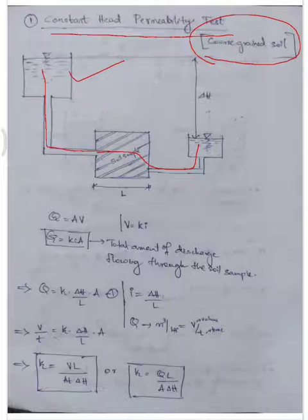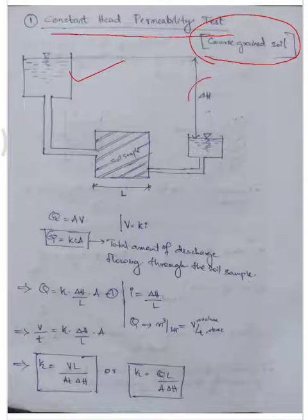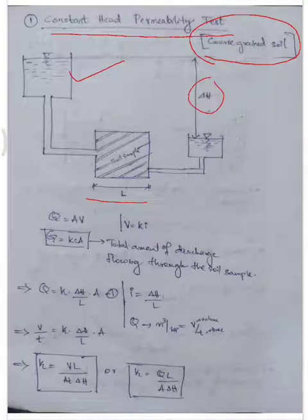Now let's go to the equation. The discharge Q is equal to area multiplied by velocity. The velocity, from Darcy's law, is k times i, where k is the coefficient of permeability and i is the hydraulic gradient. So we substitute to get Q equal to k times i times A.